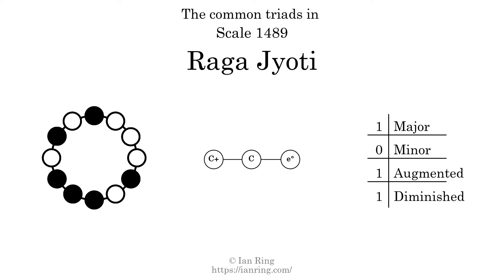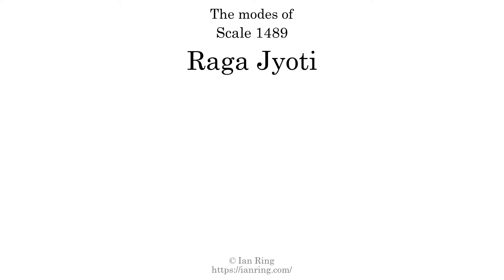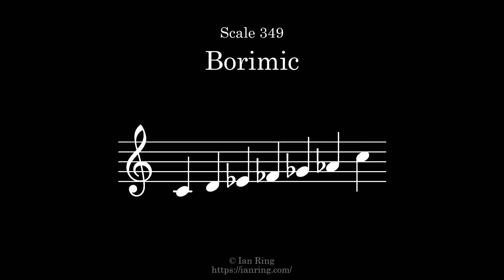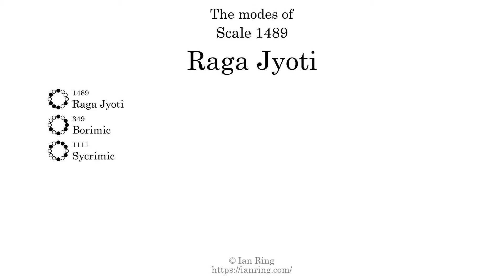Here is a Hamiltonian path of parsimonious voice leading that uses all the triads. This scale has 6 modes. The first mode is itself. The second mode is scale 349, also known as barimic. It sounds like this. The third mode is scale 1111, also known as krimic. It sounds like this.